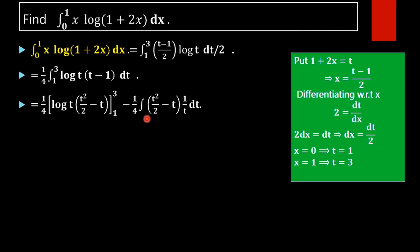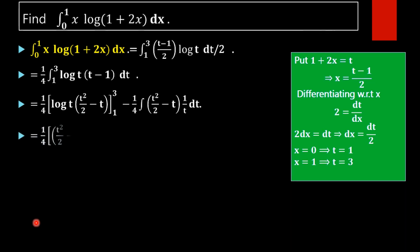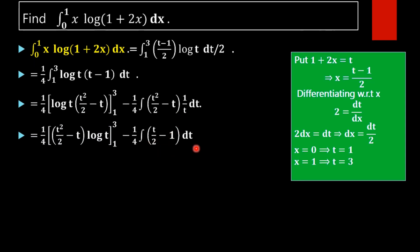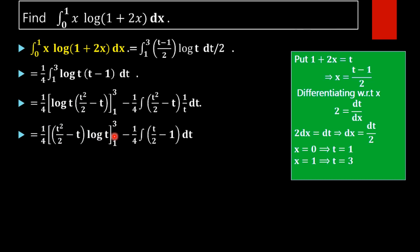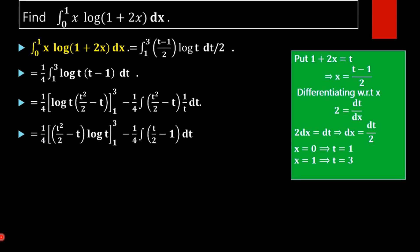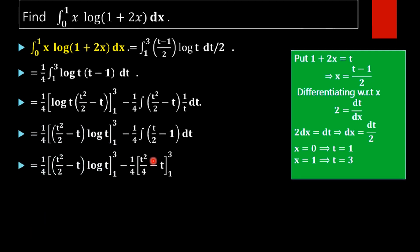After simplifying, the term (t²/2 minus t) times (1/t) gives t/2 minus 1. So we need to integrate (t/2 minus 1) dt, which gives t²/4 minus t. We apply this result with the limits from 1 to 3.